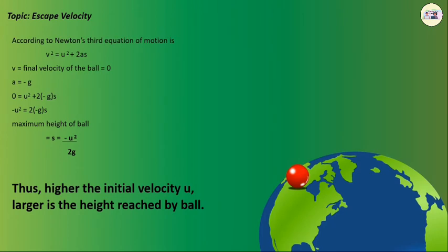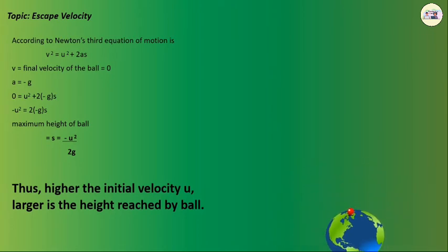Above a particular value of initial velocity, the ball is able to overcome the downward pull by the earth and can escape earth forever without falling back. This velocity is called escape velocity.